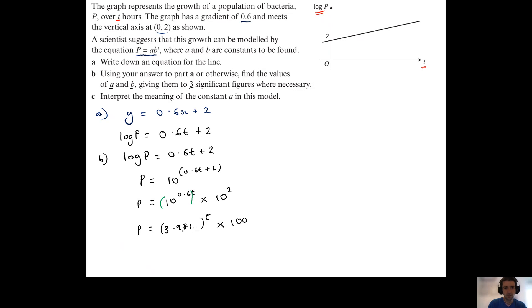Now rounding this value here to three significant figures as I've been asked to, I'm just going to go up here now for my conclusion to part b. I'm going to say that p is equal to 100 multiplied by 3.98 to the power of t.